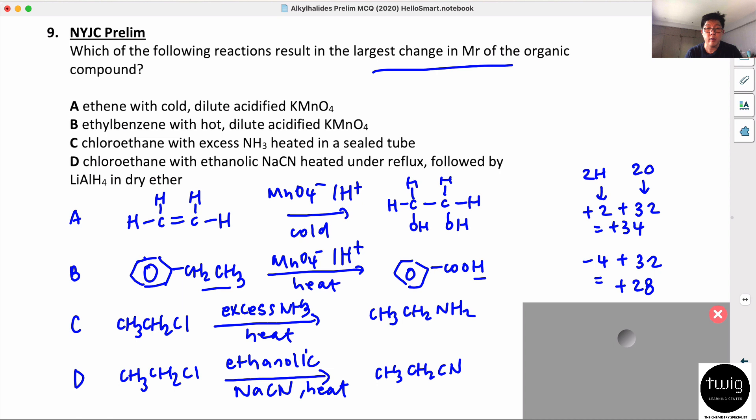For C, you're undergoing nucleophilic substitution and replacing the Cl with NH2. So you take away 35.5 and then you add 16 for NH2. 14 plus 2 is 16. So the overall change is minus 19.5.